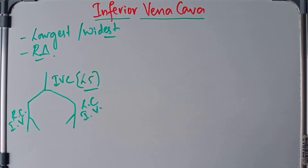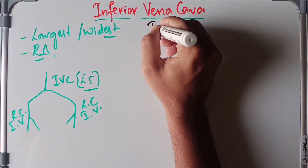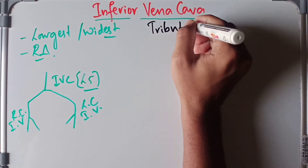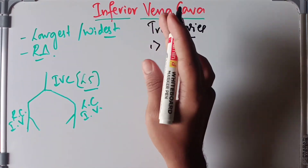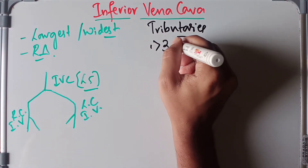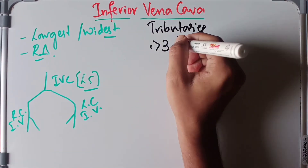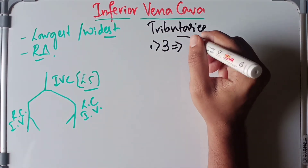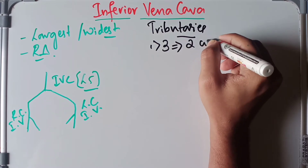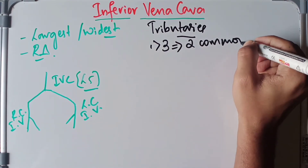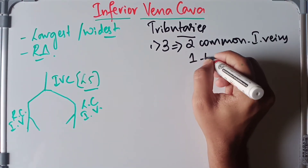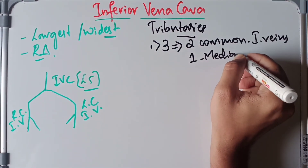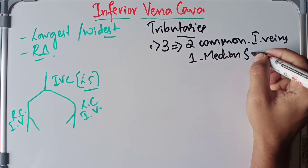Now for the tributaries of the inferior vena cava. First we have three formative veins: the two common iliac veins and the one median sacral vein.